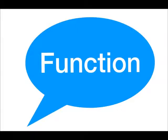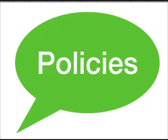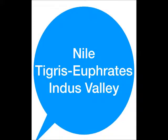Environmental circumscription: Many states emerged in particular areas such as the Nile, Tigris-Euphrates, and Indus valleys in the Old World, and the Valley of Mexico. All these areas differ from one another in many ways in their topography and other features specific to the place. The common feature was their fertile land for agricultural purposes.